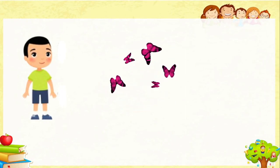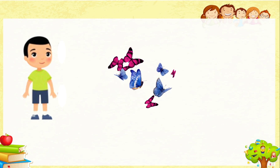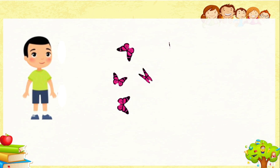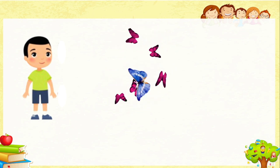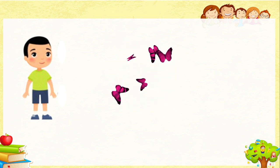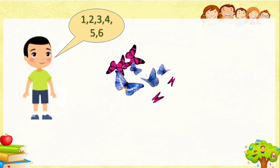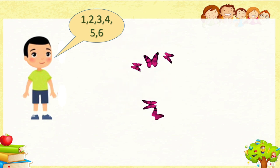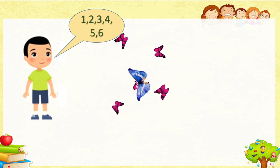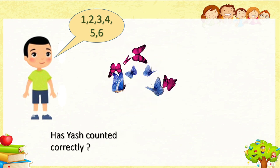Here you can see butterflies, and one boy is trying to count them as they are flying here and there. Let us see how many butterflies he counts: one, two, three, four, five and six. He counted six butterflies. Has Yash counted correctly?